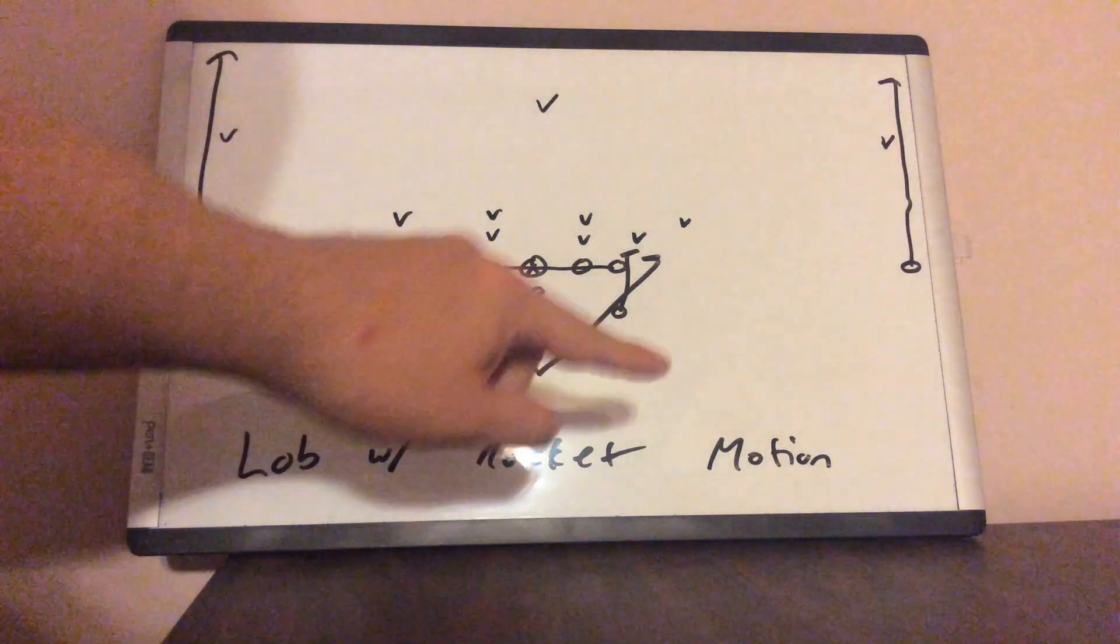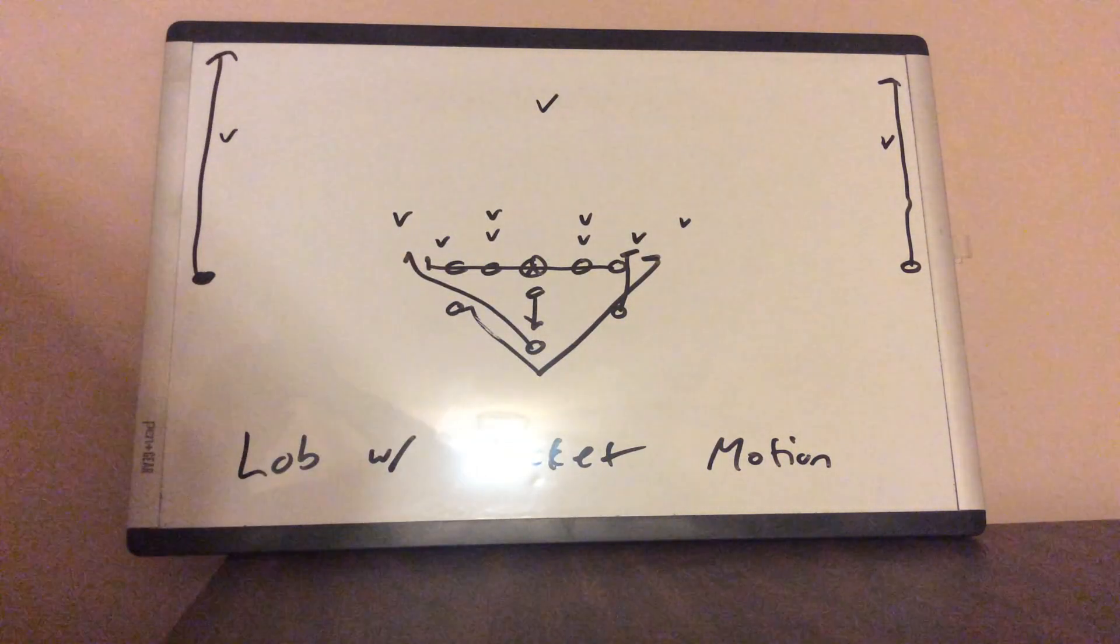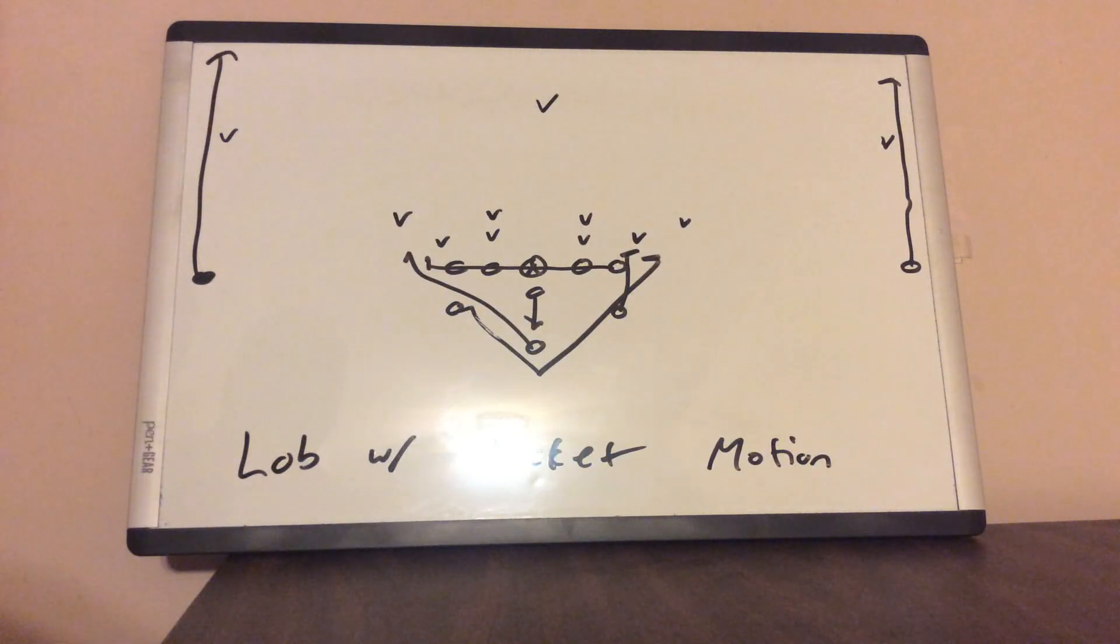But you want to run it away from the rocket motion to get that guy to move so he can't help out on the route. So that's the lob of rocket motion. You want to run that if you're able to ever one-on-one somebody receiver against a corner.